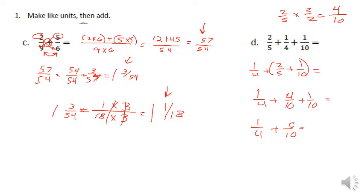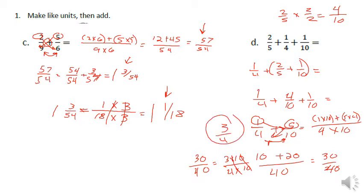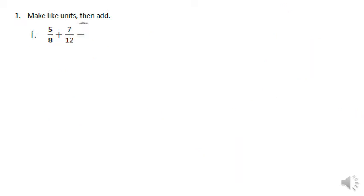Now we do the smiley face method on one fourth plus five tenths. We set up four times ten as the denominator, and on top we have one times ten plus five times four, which gives us 10 plus 20 over 40, equaling 30 fortieths. That simplifies to three times ten over four times ten — taking out the tens, our answer is three fourths.